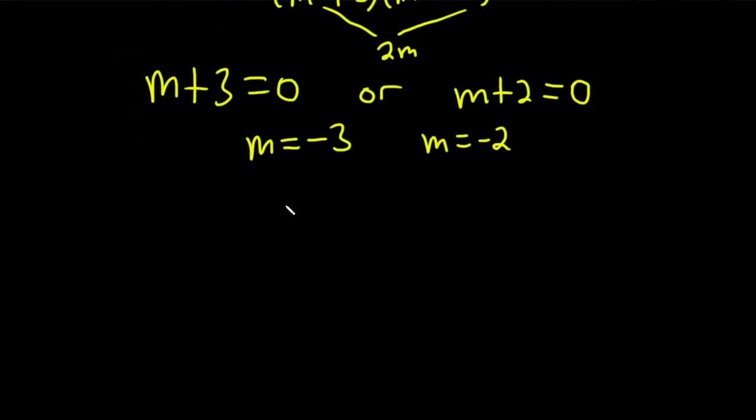So whenever you have a case where you have distinct real roots, your answer is the following. It's a constant c1 times e, and then your root is going to go up here, and then we'll have an x plus c sub 2, and then your e goes here, and then your solution or root goes here, and then you have an x.